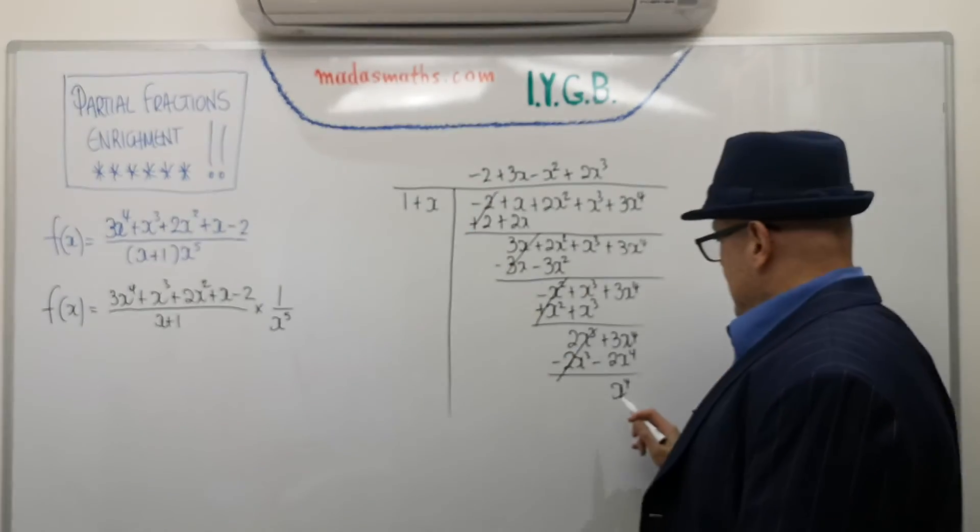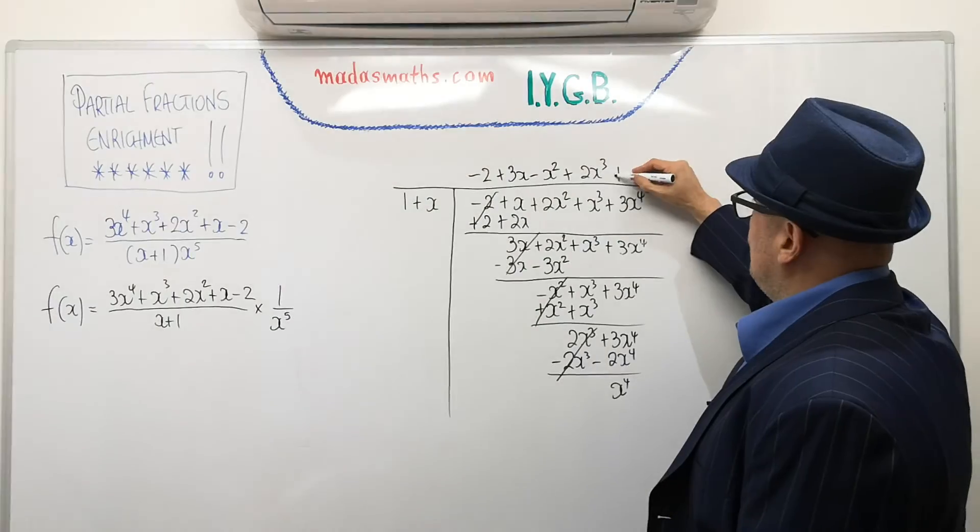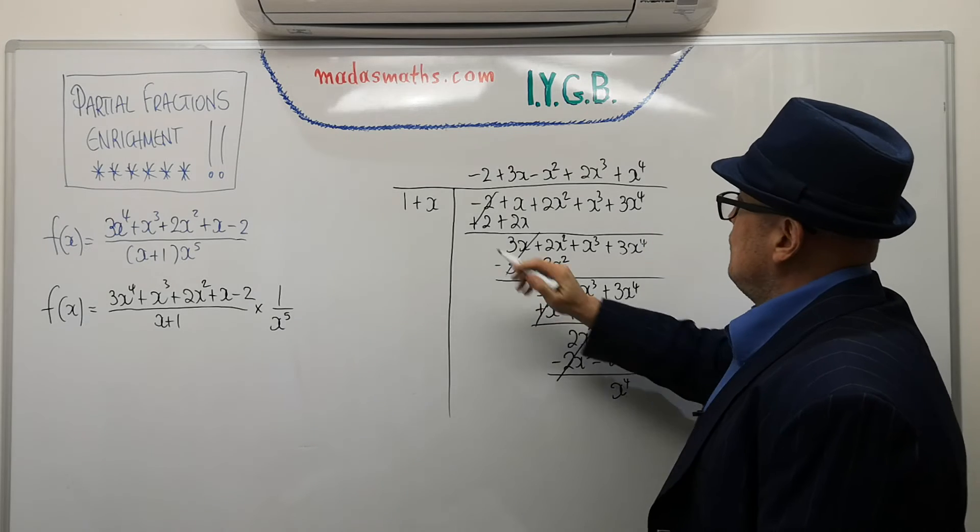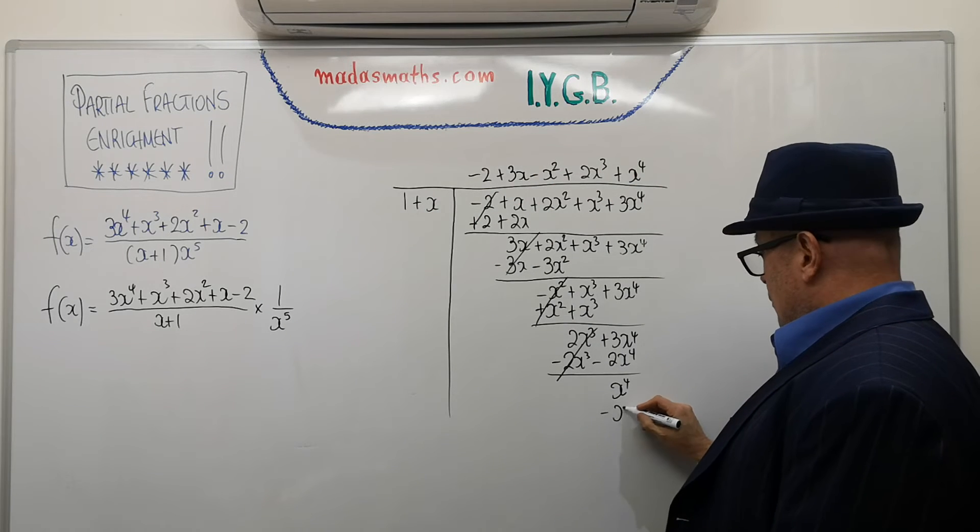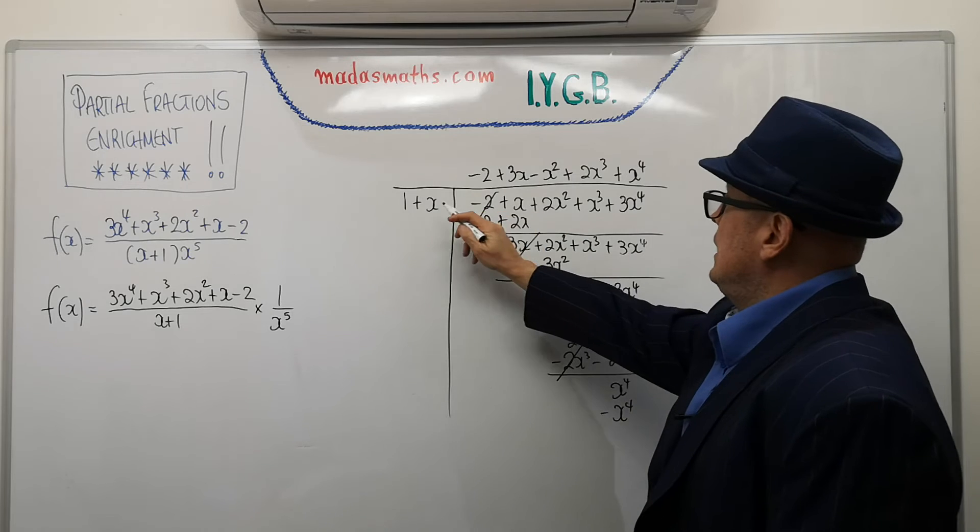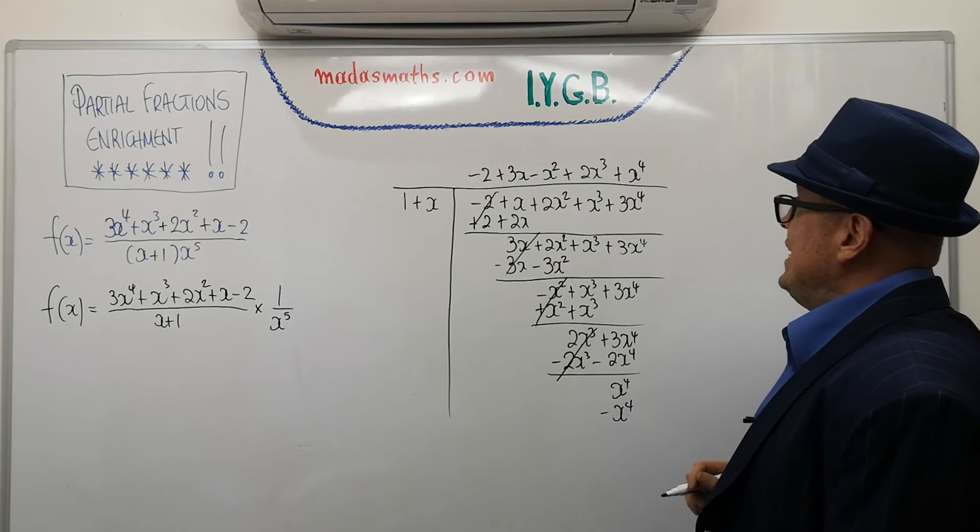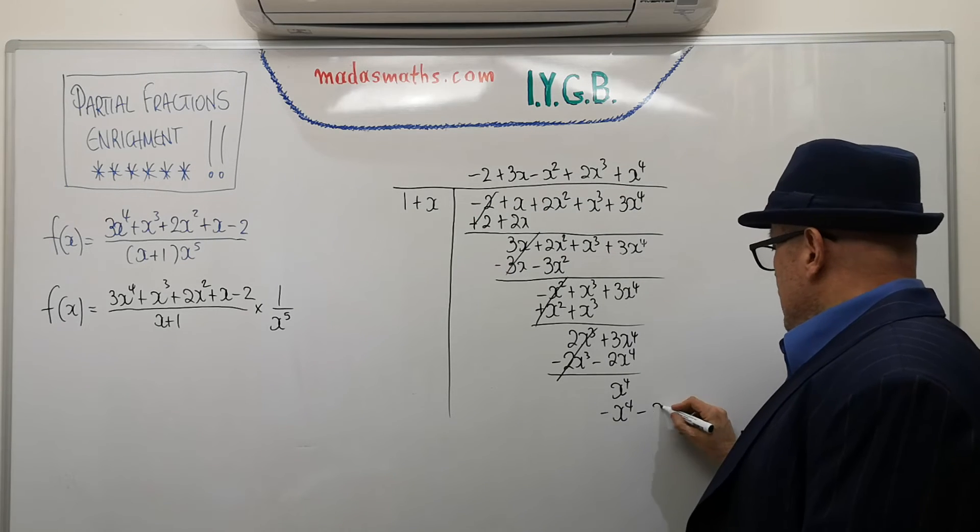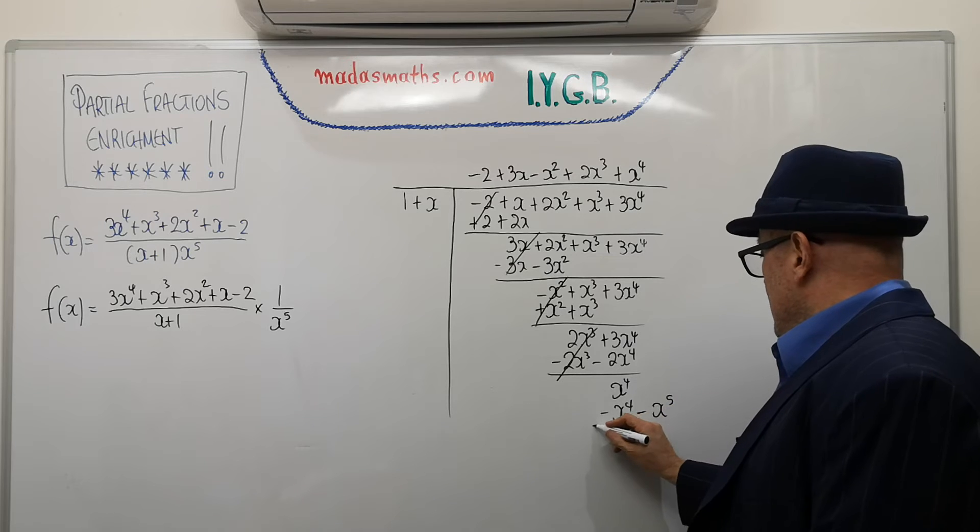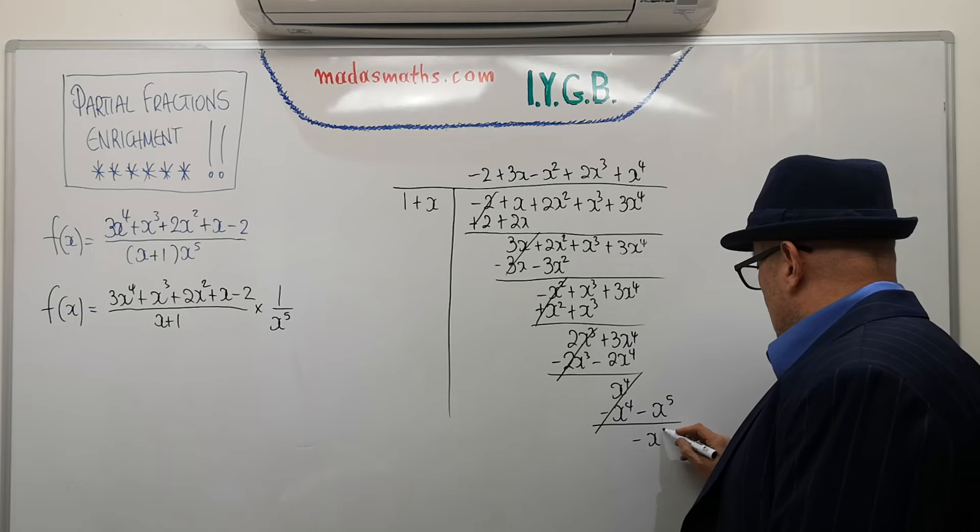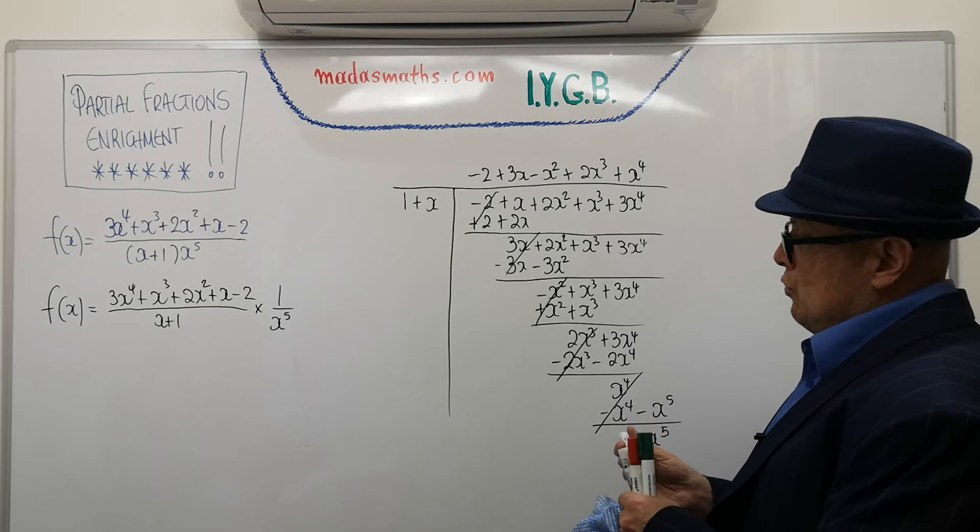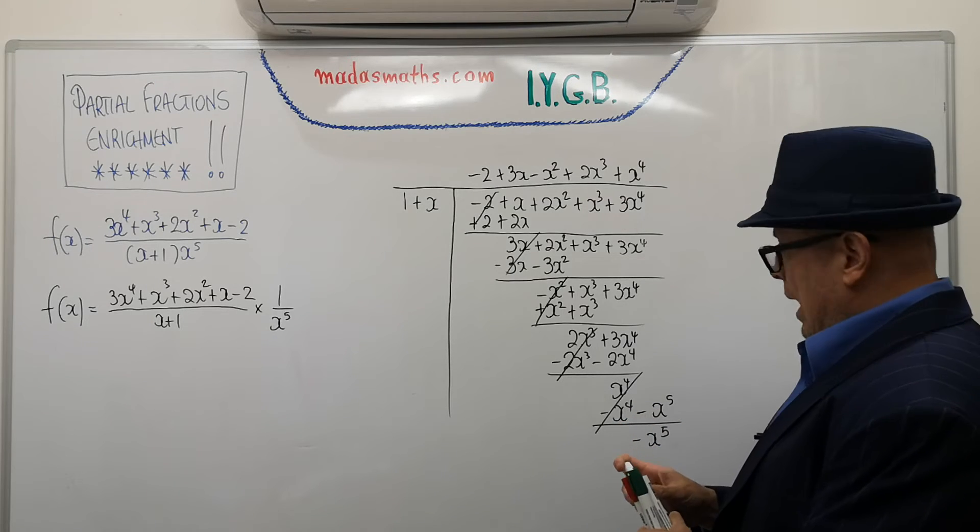So, I continue. 1 into x to the 4. It goes, of course, x to the 4 times. 1 times x to the 4 is x to the 4 minus x to the 4. And lastly, x times x to the 4 is x to the 5 minus x to the power of 5. And, of course, this cancels. And I've got now minus x to the power of 5. And this is what happens next.